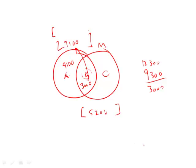That gives us 4,100. As far as L goes, we can see that 4,100 of L was only L, not M, and 3,000 was overlap.